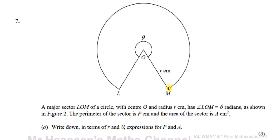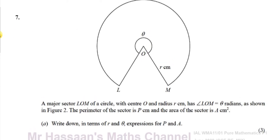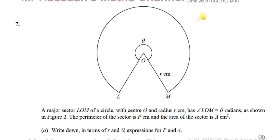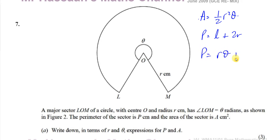Question number seven says: a major sector LOM of a circle with centre O and radius r has the angle LOM equals theta radians, as shown in figure two. The perimeter of the sector is p centimetres and the area of the sector is A centimetres squared. Write down, in terms of r and theta, expressions for p and A. The area of a sector when the angle is in radians is A = ½r²θ, and the perimeter is the arc length plus the two radii, where arc length is rθ, so perimeter = rθ + 2r.